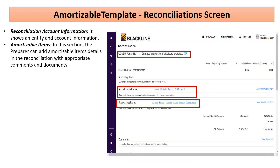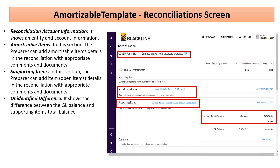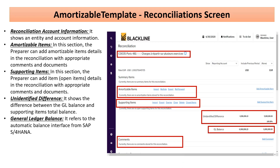Then we have the supporting items section, which captures all open items for this account. There is also an unidentified difference, which needs to be zero in order to certify this reconciliation. The GL balance is the balance for this account in the ERP system — BlackLine is well connected to the ERP, and balances can flow in either manually by a system admin or through an automatic connection between the ERP and BlackLine. Lastly, there is an option to add comments, supporting documents, and hyperlinks.